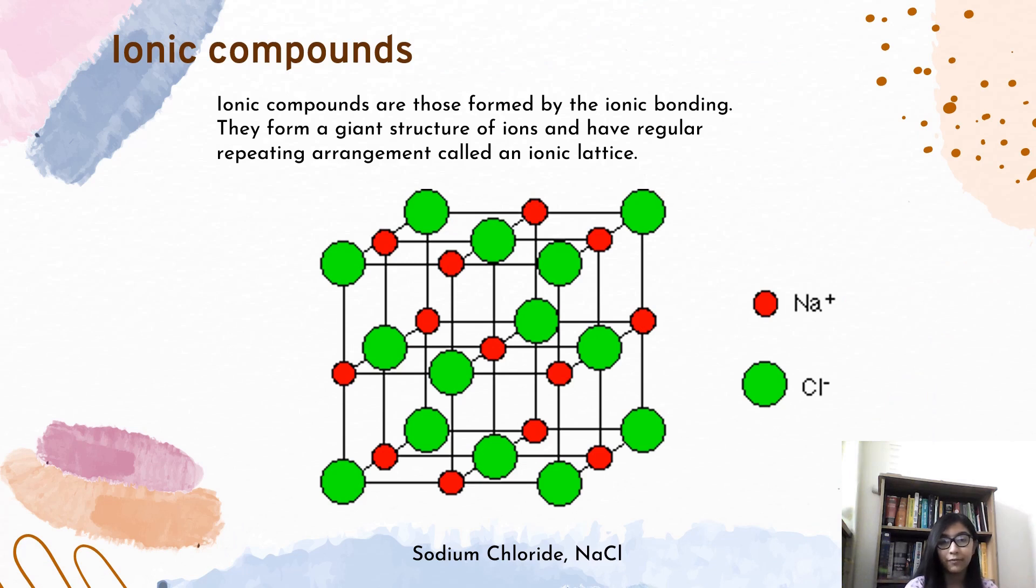Ionic compounds are those formed by ionic bonding. They form a giant structure of ions and have a regular repeating arrangement called an ionic lattice. If we observe one layer of the lattice, we will see that each chloride ion is surrounded by 6 sodium ions.